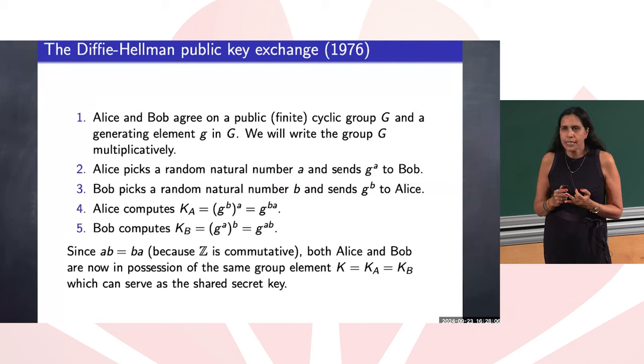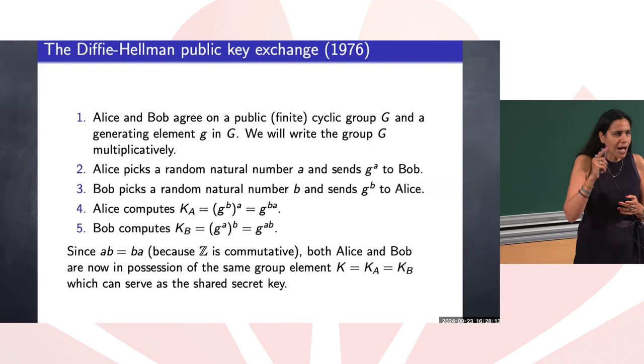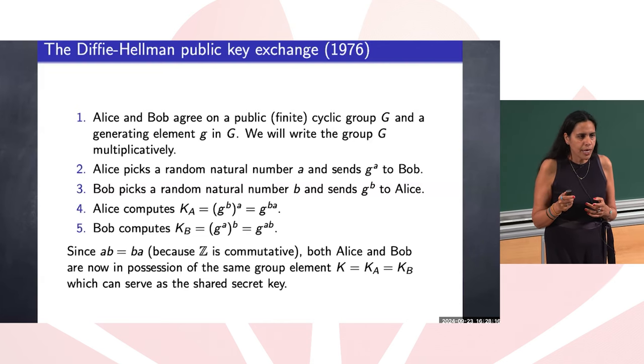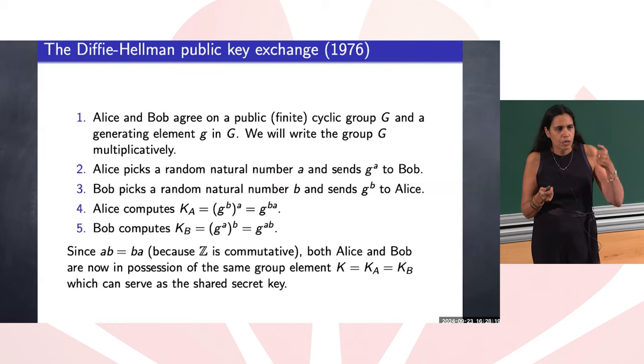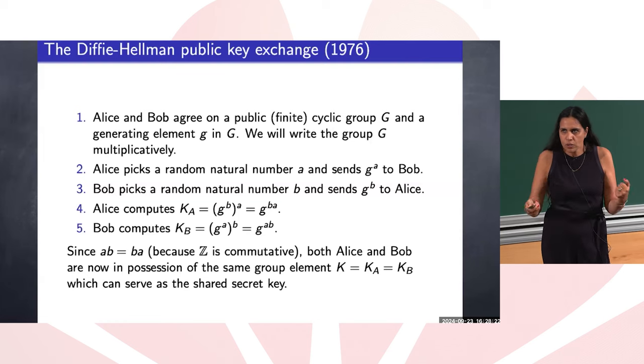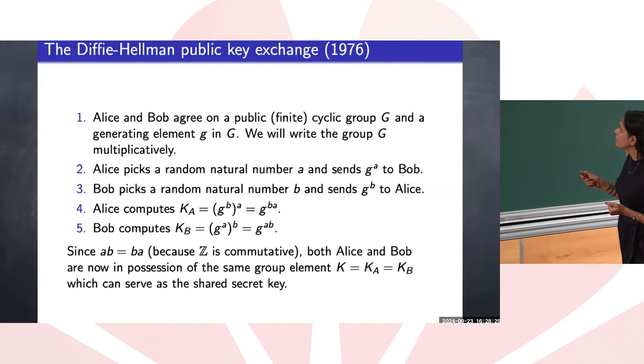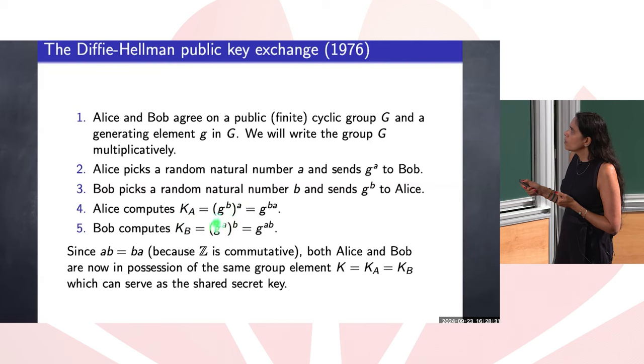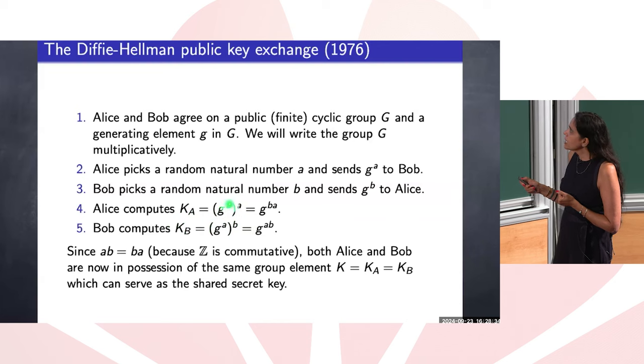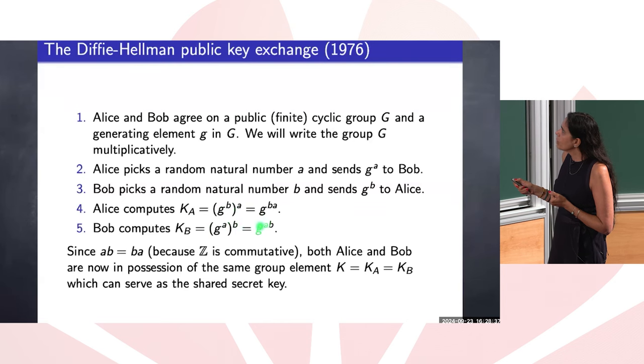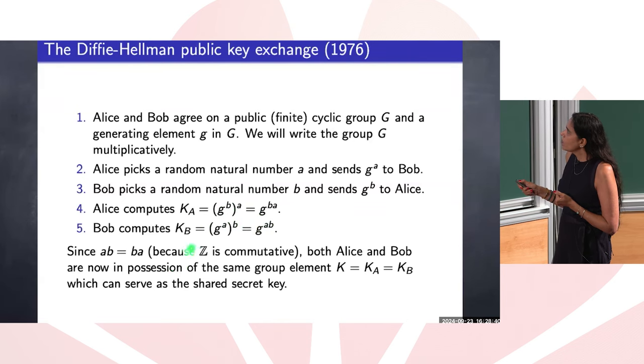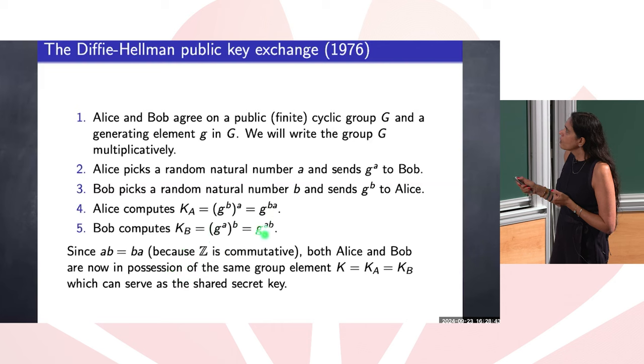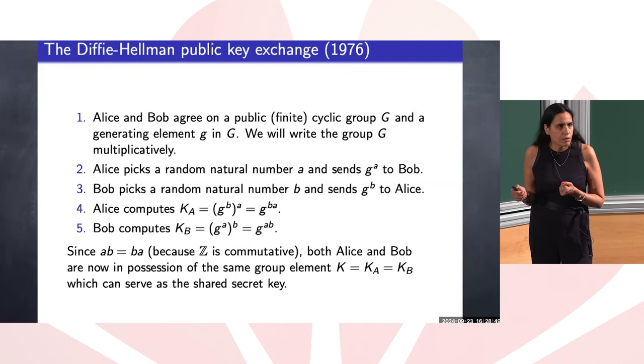Now g is public, g to power a is public, g to power b is public, and p is public. And note that the power a and b are coming from integers, and integer numbers they commute. a times b is the same as b times a, so they commute. So in other words, Alice can compute g to power b because g to power b is public, a is her secret, so she can make g to power b a. And Bob can compute g to power a b, which k_a is the same as k_b. So they agree on the same shared key.